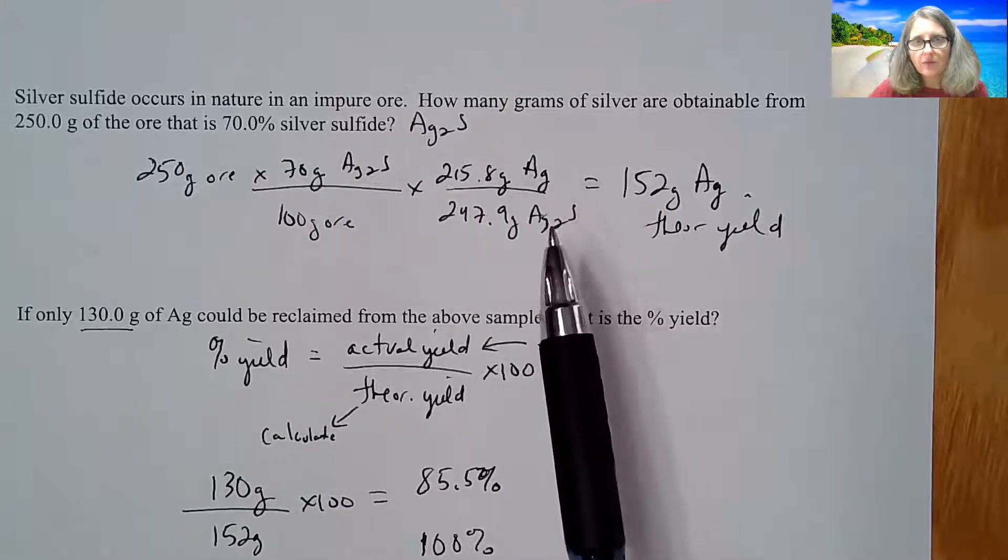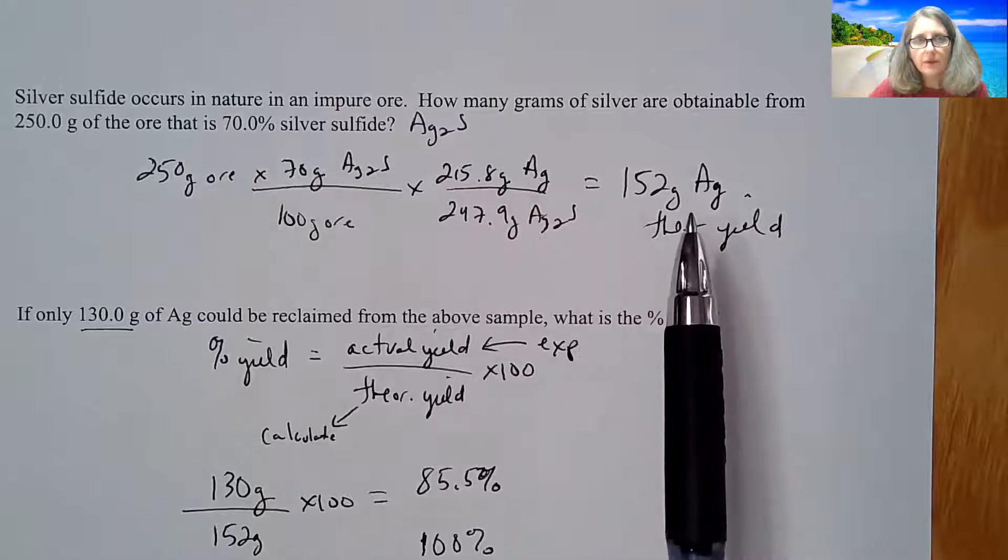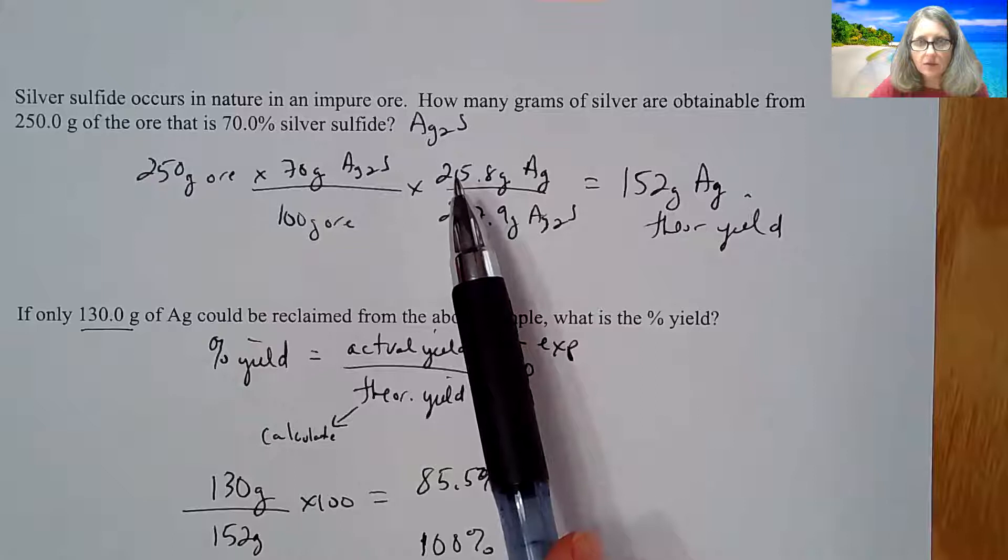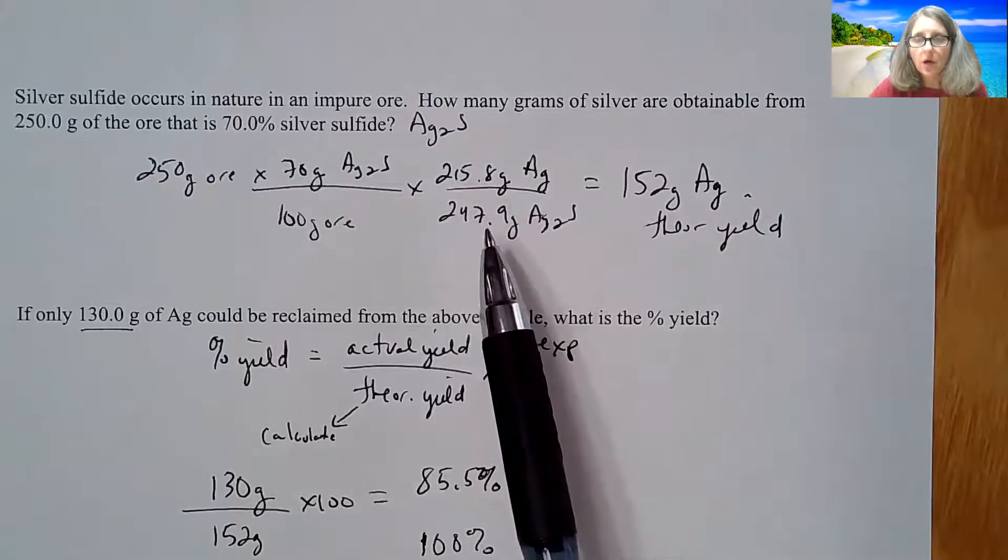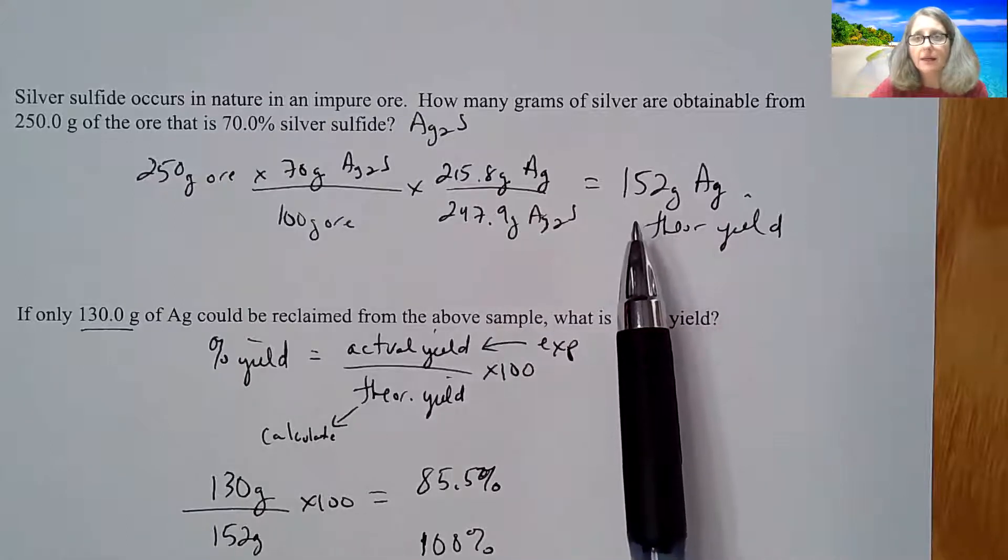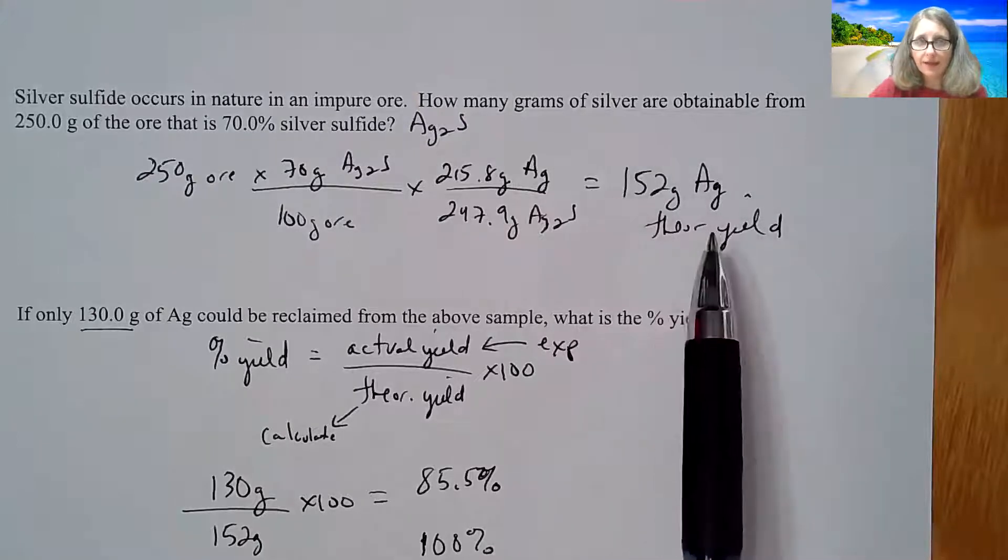And then if I look at my formula of AG2S, essentially I have two silvers for all of the total in there. So if I want to know how much is silver, all I got to do is take the mass of the silver two times the molar mass of silver over the total. And that will give me my amount of silver.